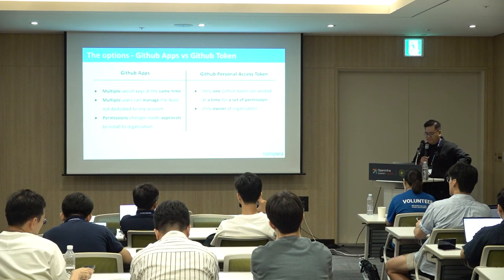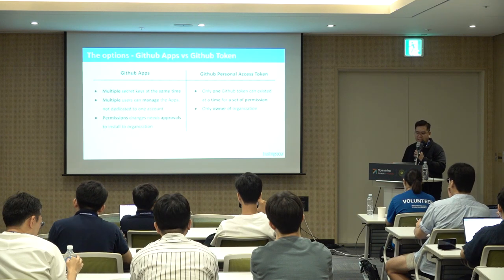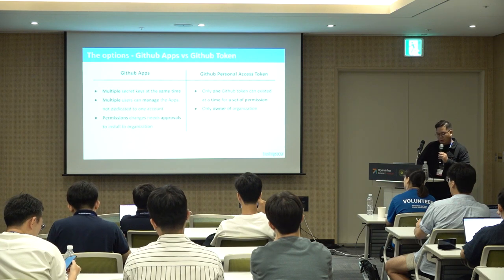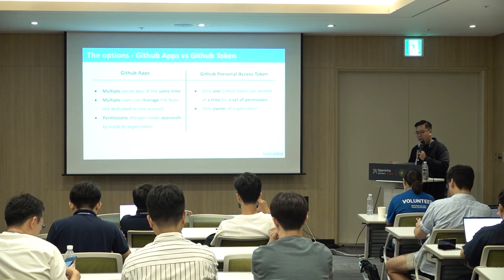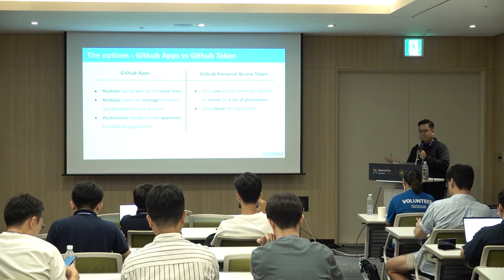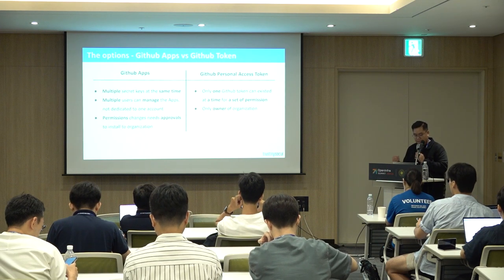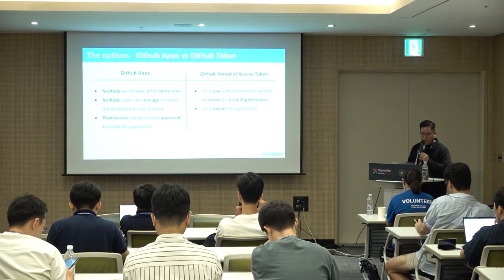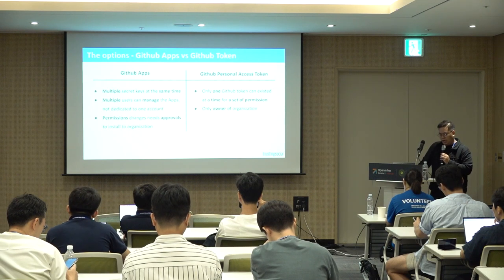With the GitHub App we can have two keys at the same time, so we can rotate without downtime when we rotate the private key. Also, the GitHub personal access token is dedicated to one account — you have to create a bot or something else and generate the token on it — but with the GitHub App we can add multiple users to manage the app, not dedicated to one account.